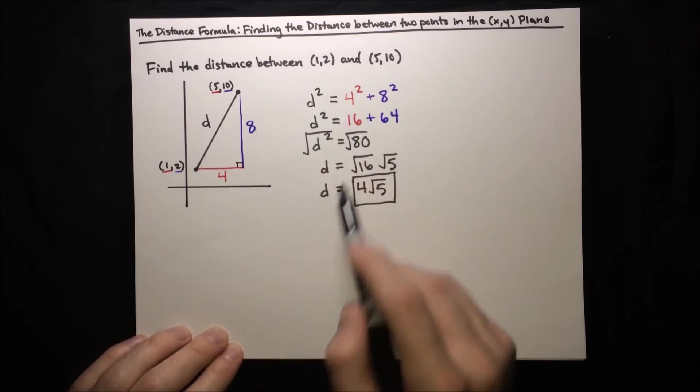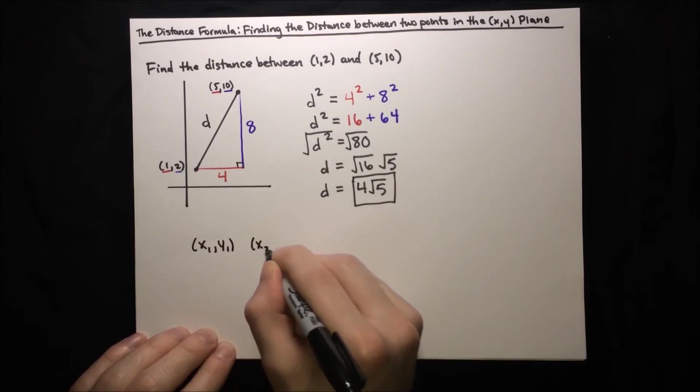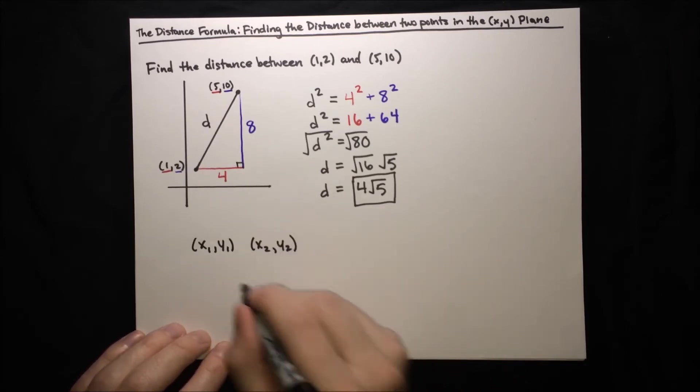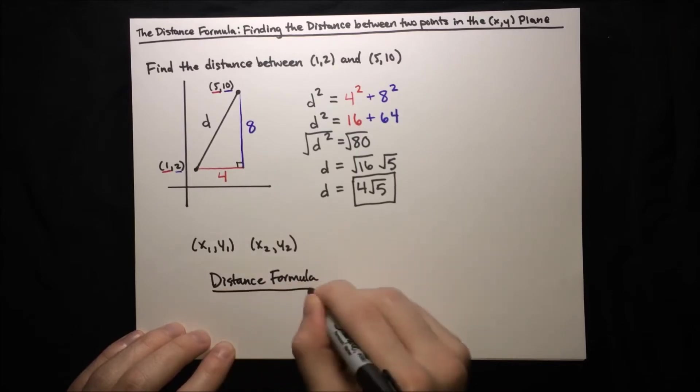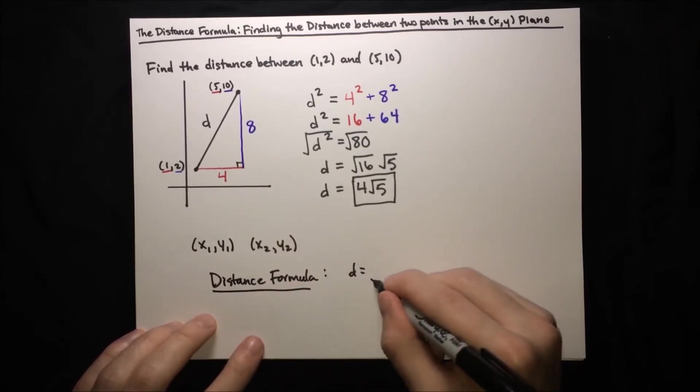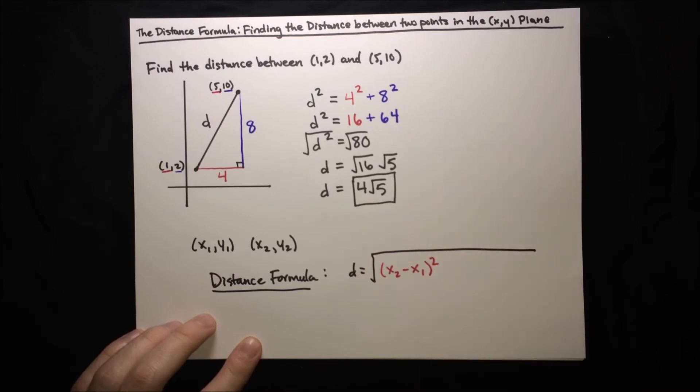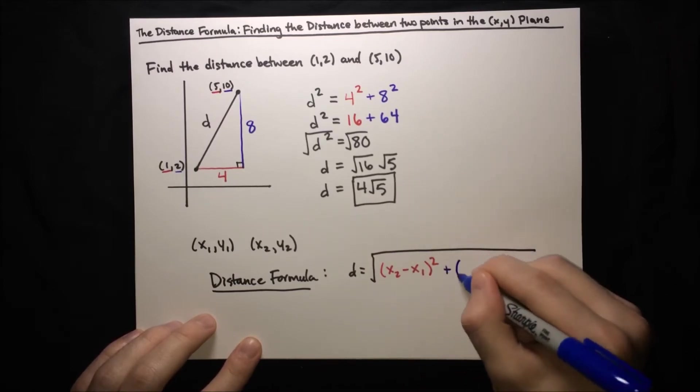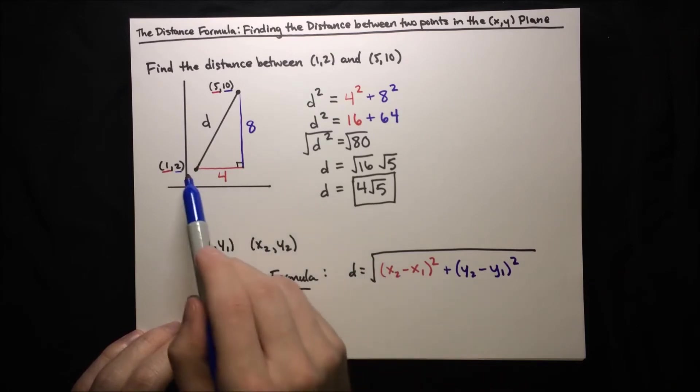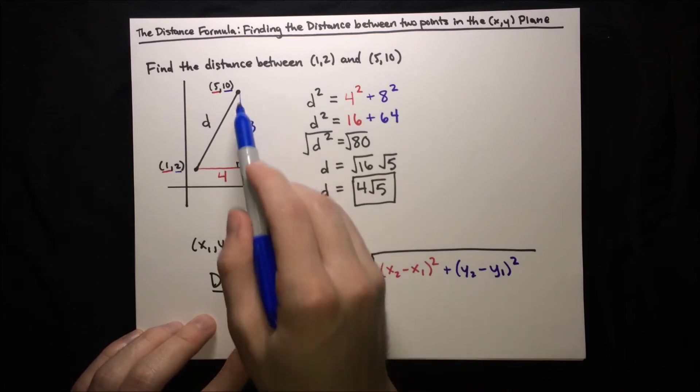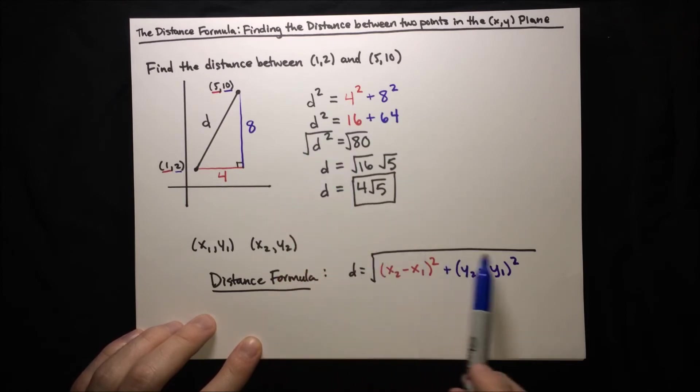In general, using this method on any two points, (x₁, y₁) and (x₂, y₂), results in the distance formula, which is given right here. The distance formula says that the distance is just the square root of (x₂ - x₁) squared plus (y₂ - y₁) squared. And that should look pretty familiar, x₂ - x₁ is just the length of this leg, y₂ - y₁ is just the length of the vertical leg, and then we just square them. And then to get d alone, we have to take the root. So that's where it comes from.